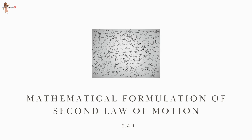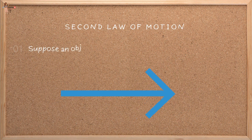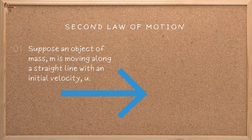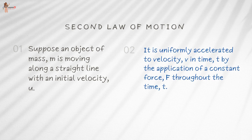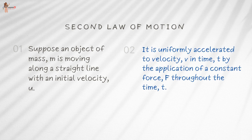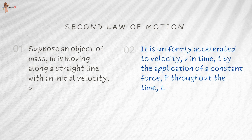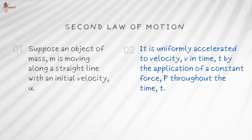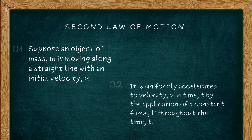The Second Law of Motion states that the rate of change of momentum of an object is proportional to the applied unbalanced force in the direction of the force. Mathematical formulation: Suppose an object of mass m is moving along a straight line with an initial velocity u. It is uniformly accelerated to velocity v in time t by the application of a constant force F throughout the time t.